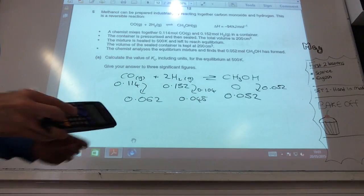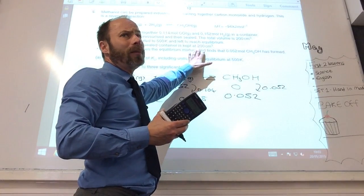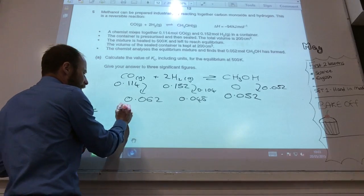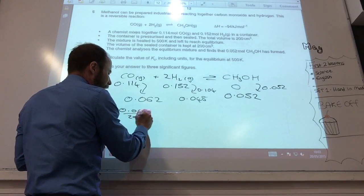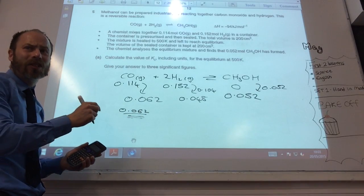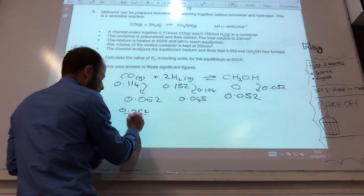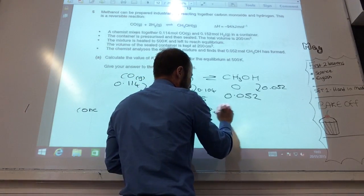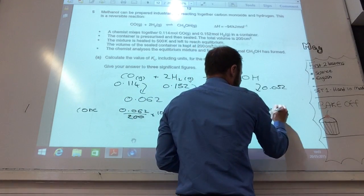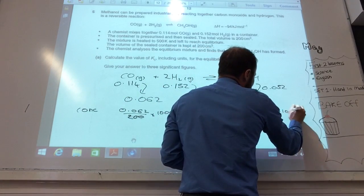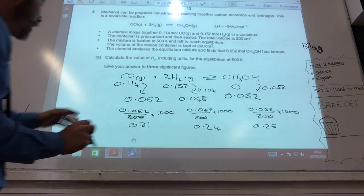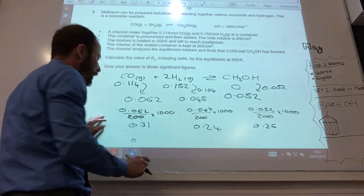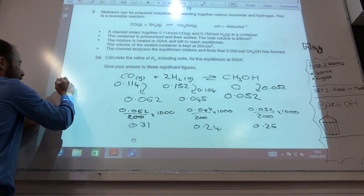So, 0.152 minus 0.104, that should give me 0.048. Right, you then need to convert that into moles per decimeter cubed. They've given you the volume in centimeters cubed, you need to convert that. So, your concentrations, basically, rather than me doing that, can you just see I have to divide by 200 times by 1,000. You could just times it by 5.